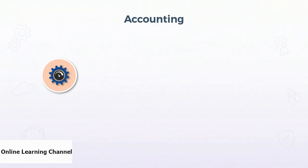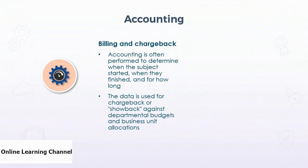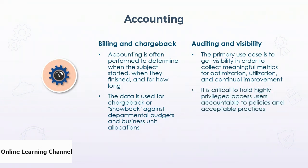The third A of AAA is accounting, done for billing and chargeback — determining when a subject started, finished, and how long an activity lasted — and for auditing and visibility to collect meaningful metrics for optimization and continual improvement. It's critical to hold privileged access users accountable to policies. Accounting information can be sent to SIEM systems, NetFlow collectors, and RADIUS/Diameter, which excel at accounting services.